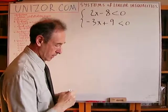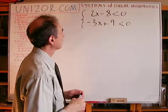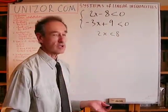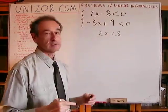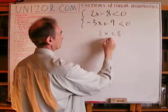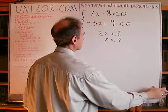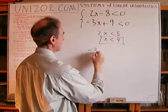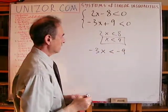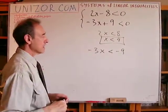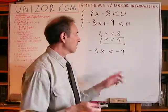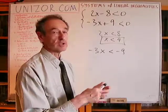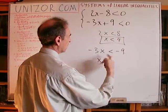Let's simplify. In the first case, we add 8 to both sides and get 2x less than 8, then divide by 2 — a positive number — so the inequality sign is retained: x less than 4. For the second inequality, we add minus 9 to both sides and then divide by minus 3. Since minus 3 is negative, the sign of the inequality is reversed to greater-than, giving x greater than 3.